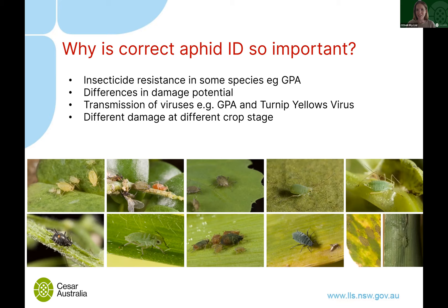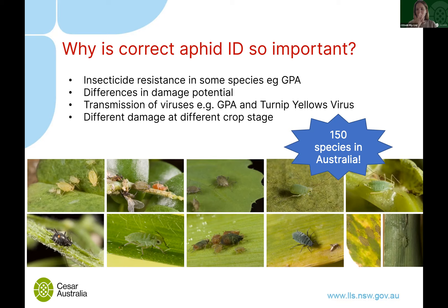So why do we care about aphid identification? They're very small and can be daunting to identify — there are over 150 species in Australia. Identification is important because some species have insecticide resistance, particularly green peach aphid. There are also differences in damage potential between species; some transmit viruses while others don't, and different species cause different damage at different crop stages. Even a large infestation may not result in economic damage depending on crop stage.